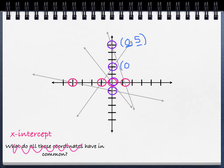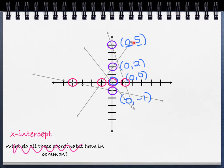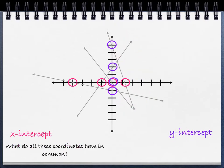This coordinate would be 0, 2. Here in the center, again, that's 0, 0. And then this one would be 0, negative 1. The 0 comes first because to get to these coordinates I'm going 0 along the x-axis — I'm staying right at the origin and just moving up and down. So if you look at those y-intercepts, they all have 0 in for their x-coordinate. Those purple points are all called y-intercepts.